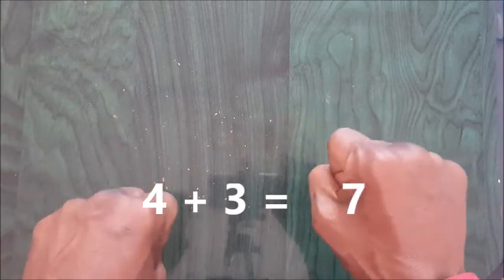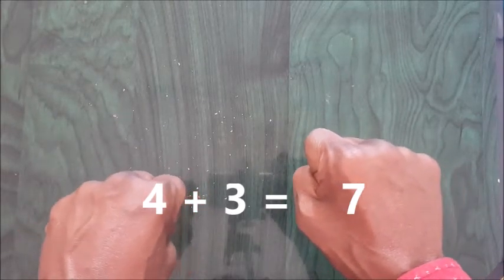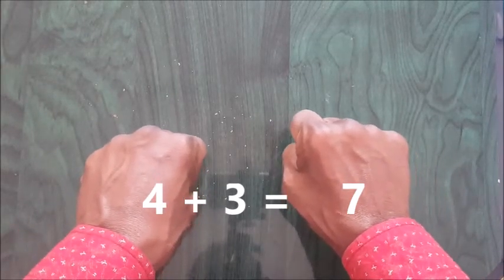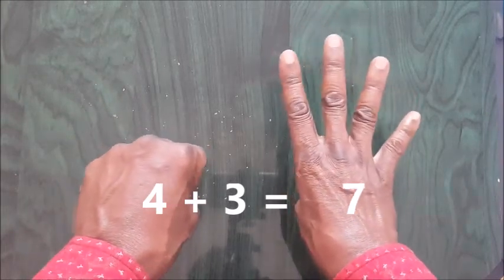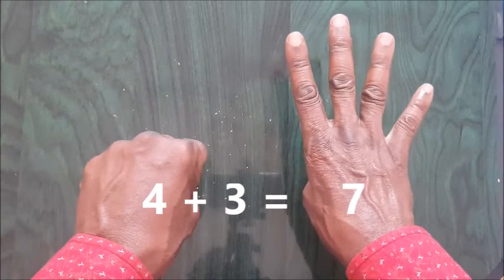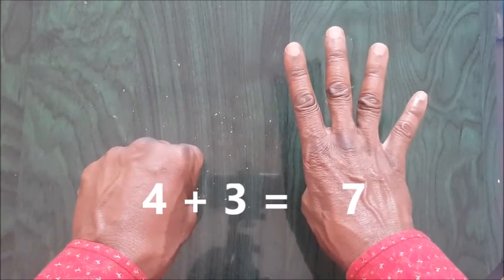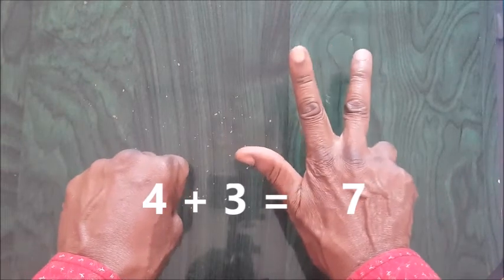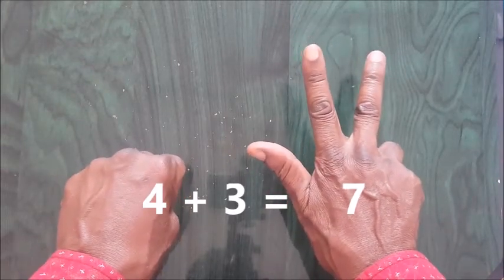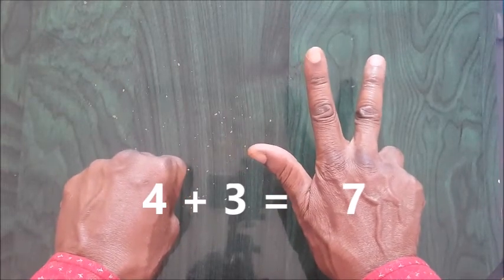Now we have 4 plus 3. 1, 2, 3, 4. 4 plus 3. You bring them down. 1, 2, 3. So 4 plus 3 is 7. 4 plus 3 is 7.